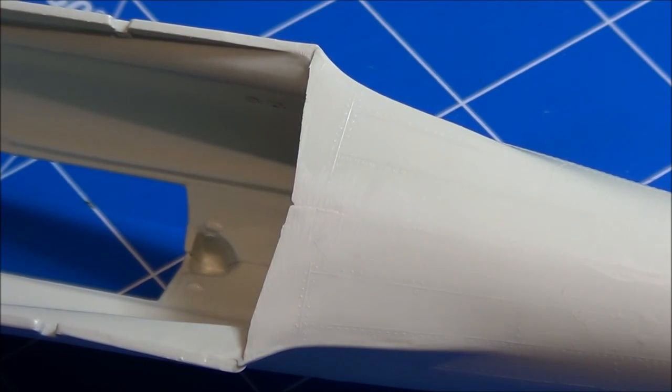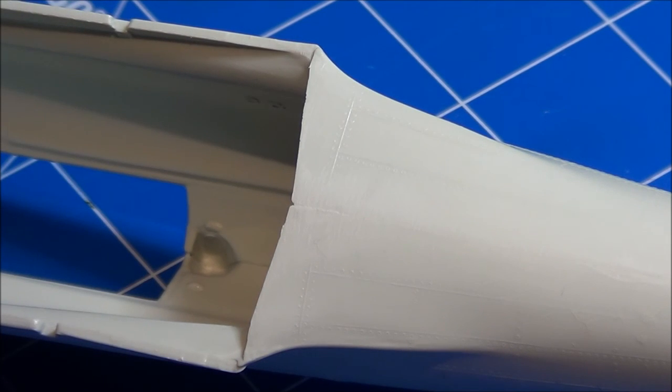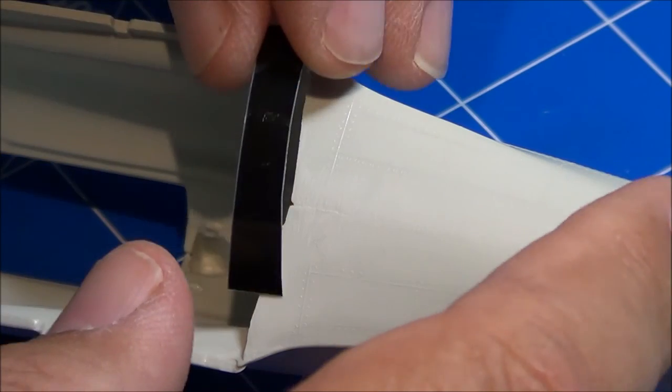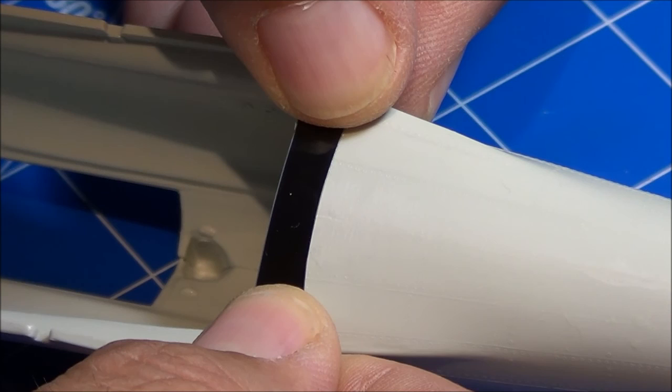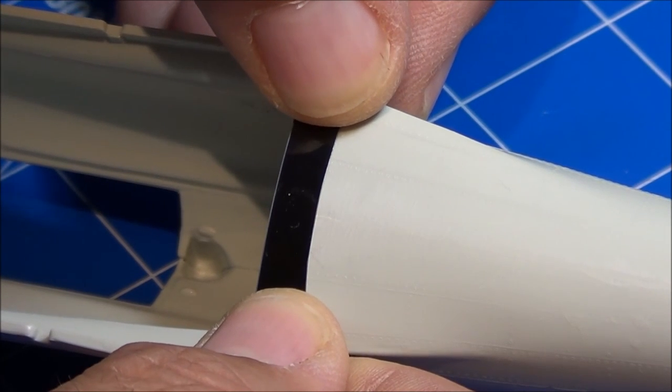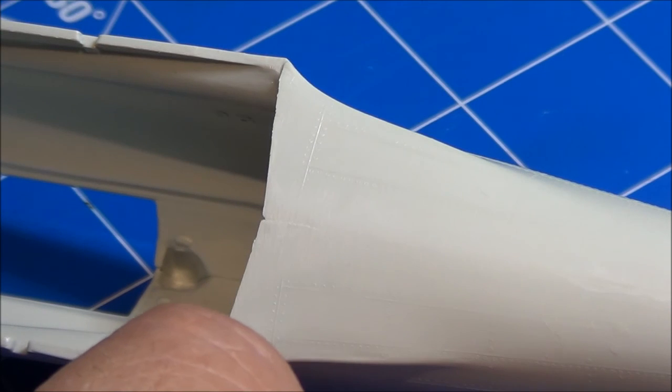Okay, so here's the bottom fuselage and I want to rescribe this panel line right here. What you do, like I said, you just take your embossing tape and lay it down where you want to rescribe that line to help keep you in line with your tool. So we'll go ahead and do that.